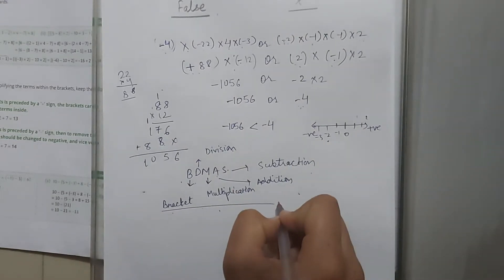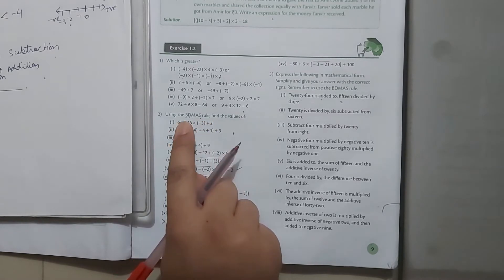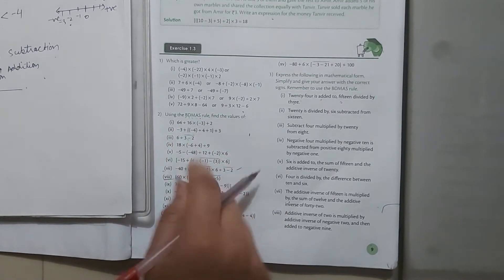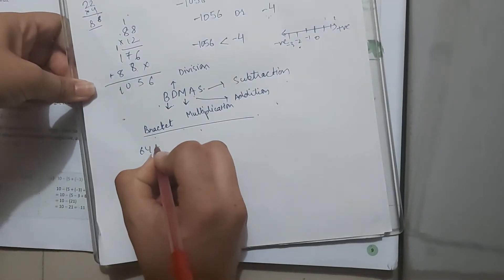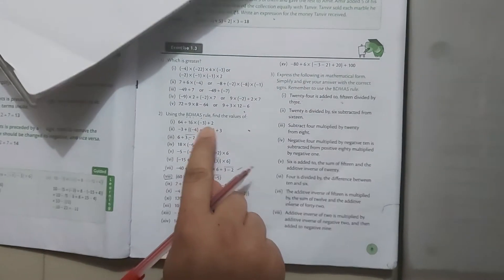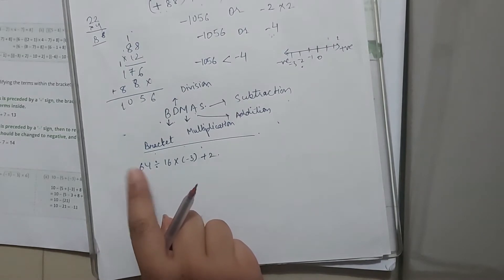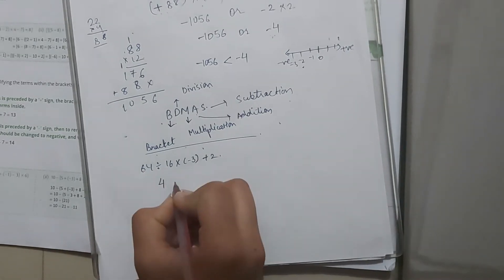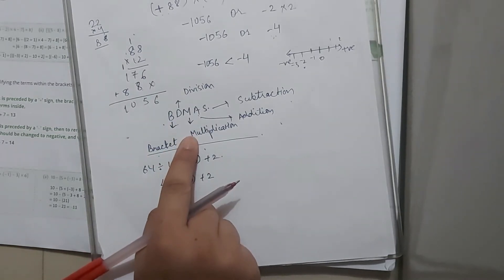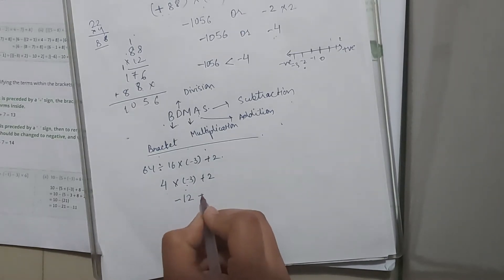Let me explain this with one example. Using the BODMAS rule, find the value of: 64 divided by 16, multiply minus 3 and then add 2. According to this rule, firstly we have to solve the division. When we divide 64 by 16, the answer is 4. Then, according to the rule, after division we choose multiplication: 4 times 3 is 12. When we multiply opposite signs, the result is negative. So we have minus 12 plus 2.